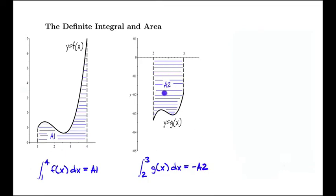So anything below the axis, we get back negative the area. Anything above the axis, we get back positive the area.